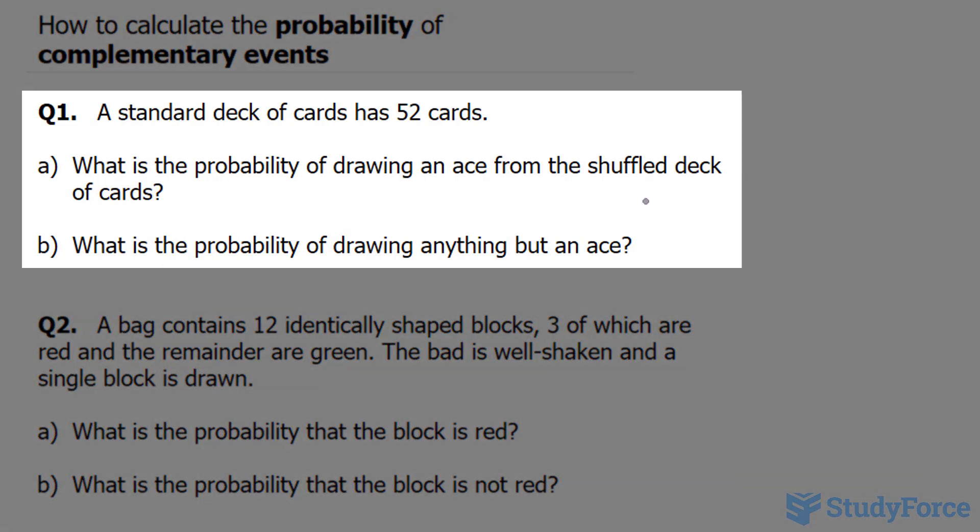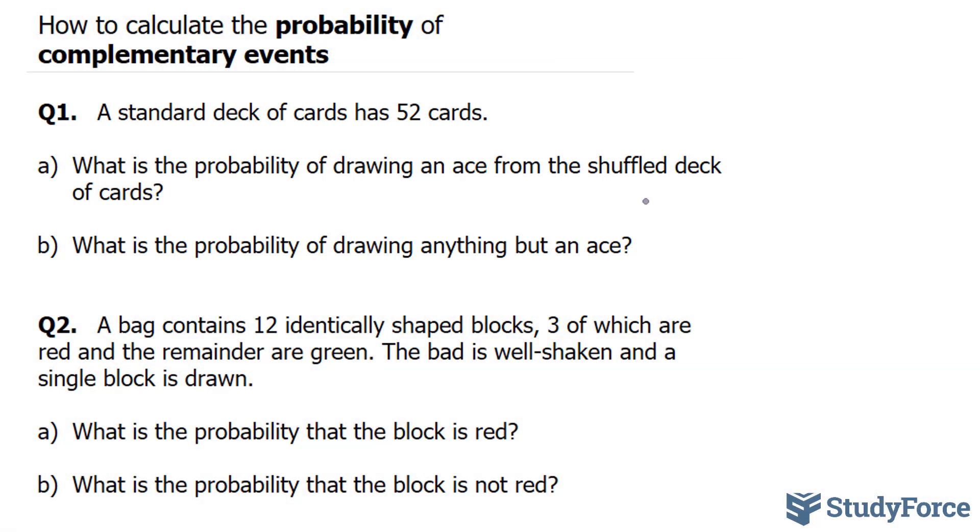In question one, they ask, a standard deck of cards has 52 cards. What is the probability of drawing an ace from the shuffled deck of cards? There are four aces in a standard deck of cards. That being said, the probability of drawing an ace is equal to 4 out of 52.